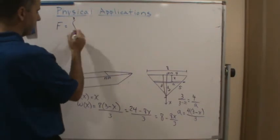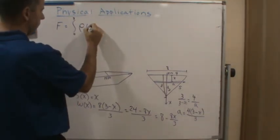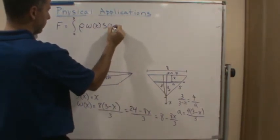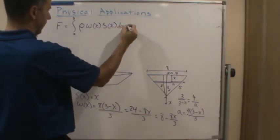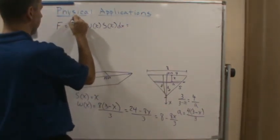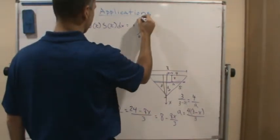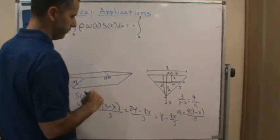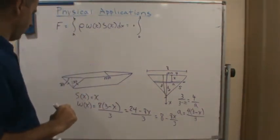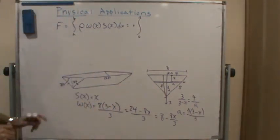And our equation is rho times W of x times S of x dx. Let's do A to B. And so that's going to give us 0 to 3, and our rho. Okay, so now here's where we're dealing with feet.